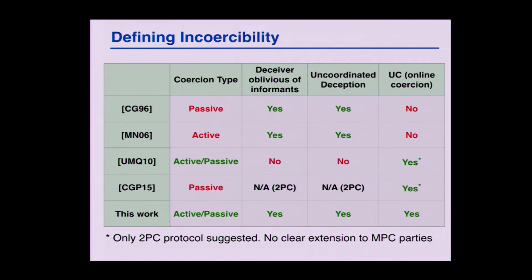So in this work, we consider both active and passive coercion in combination with active corruption. The deceivers do not know who is adversarial, they cannot coordinate with each other, and we are in UC, multi-party — everything that we would like to have.